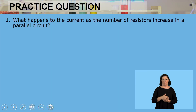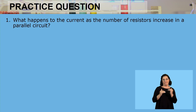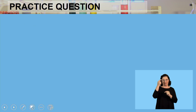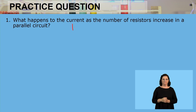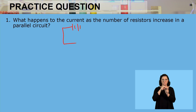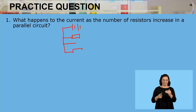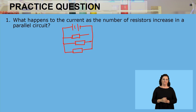We are given the first question that says: what happens to current as the number of resistors increase in a parallel circuit? We need to think back and think of our parallel circuit. We have a battery, and we can have resistors connected — let's have three resistors connected in parallel. And then let's have another one where we have one resistor.